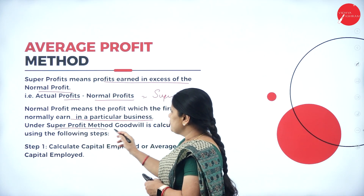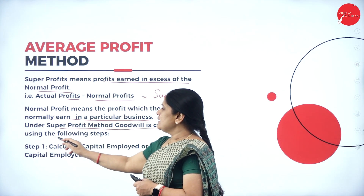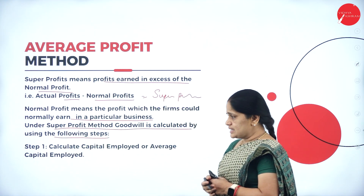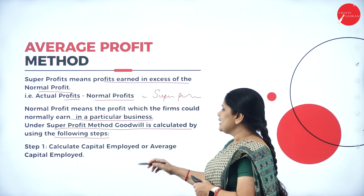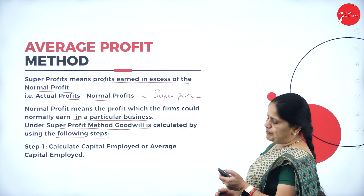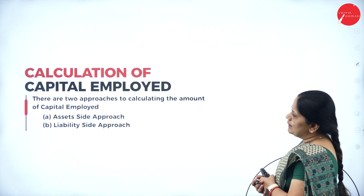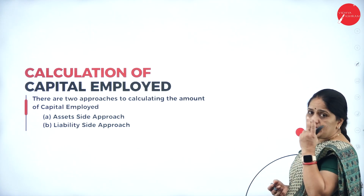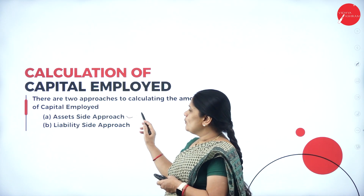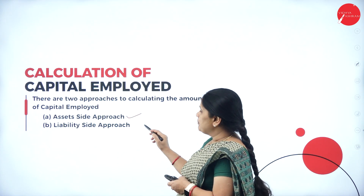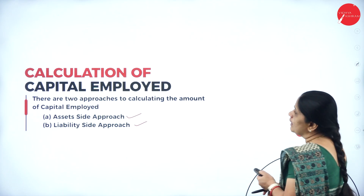Under the super profit method, goodwill is calculated using the following steps. First, calculate capital employed or average capital employed. There are two methods: the asset side approach and the liability side approach.